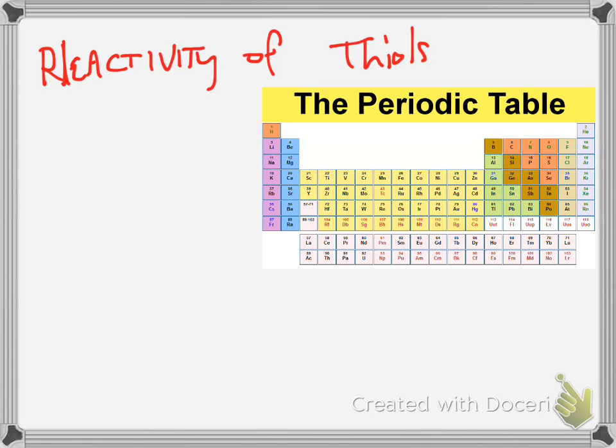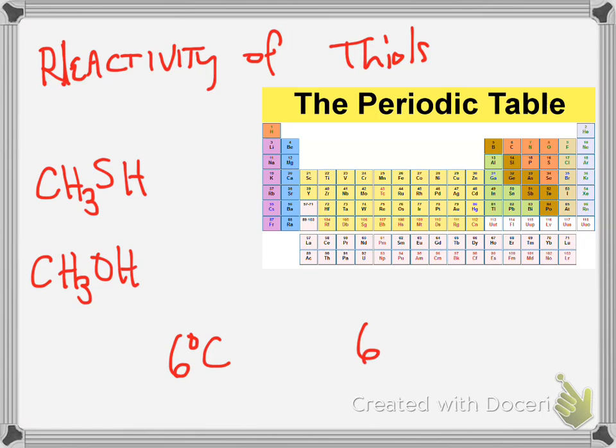Let's first compare methanethiol, which we learned how to name in the last lecture, to methanol. Now, one of these is going to have the boiling point of 6 degrees Celsius, and one has a boiling point of 65 degrees Celsius. Now we have to logically think about which one has the lower versus the higher and what that indicates.